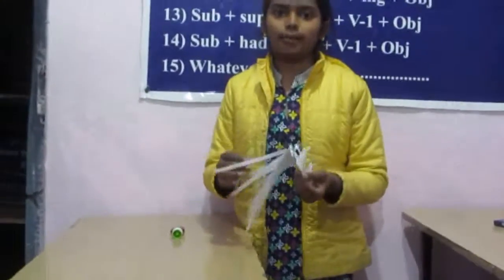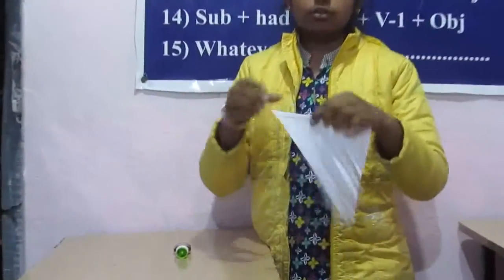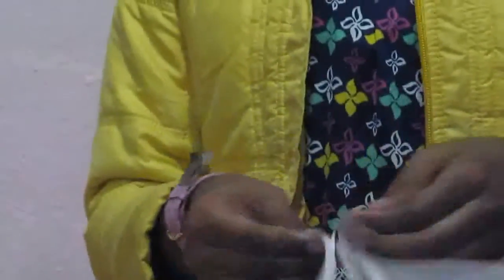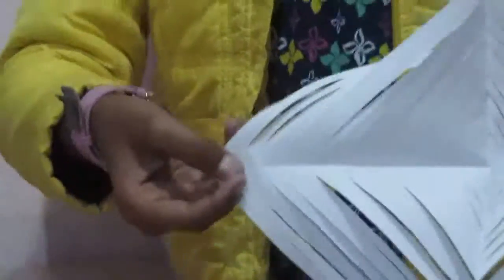Today we will teach you how to make an origami. First you have to take a square shape like this and then fold it like this.